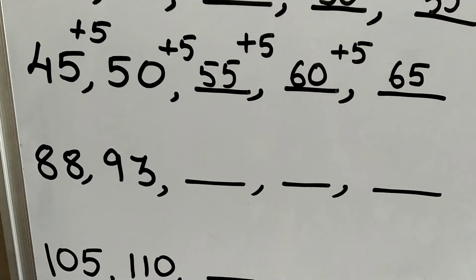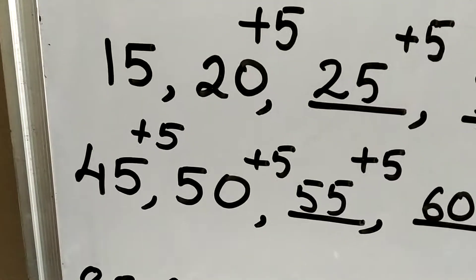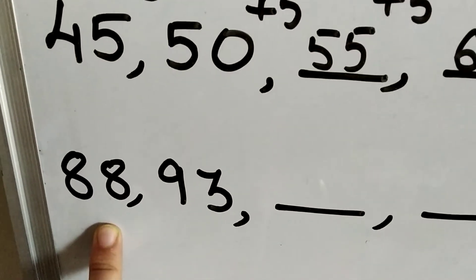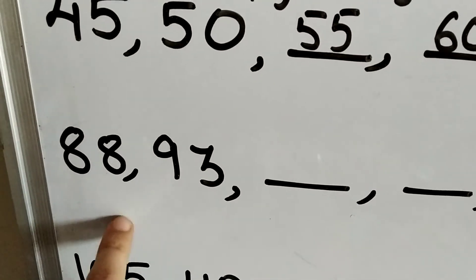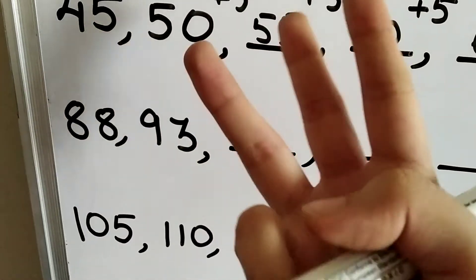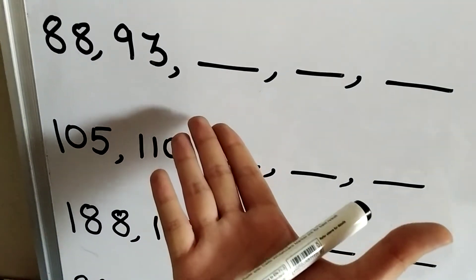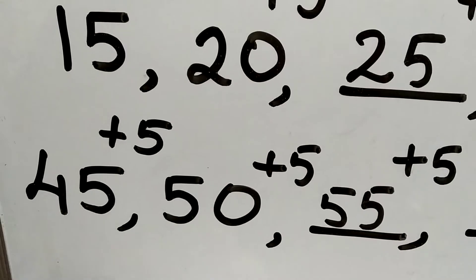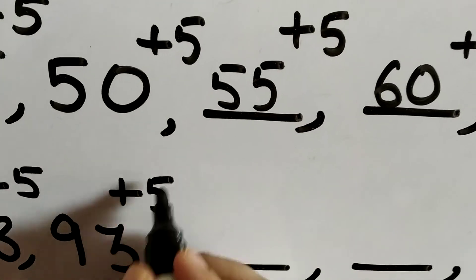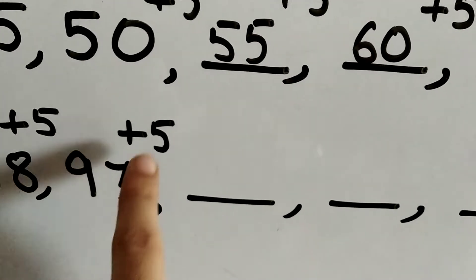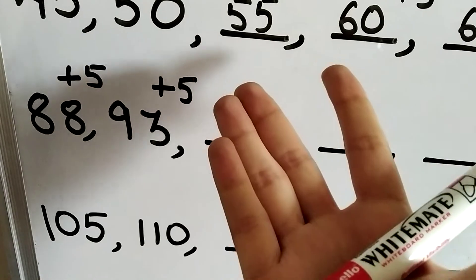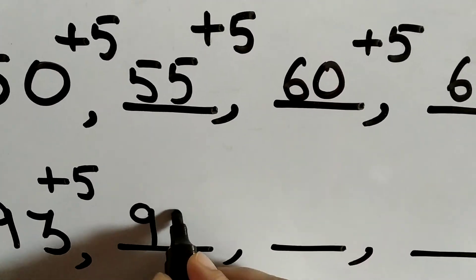Now there is a change in this category of question. We have 88 and 93. We count from 88 to 93: 88, 89, 90, 91, 92, 93 — again a difference of 5 numbers. So adding plus 5 to 88 gives 93. Now we need to complete the given blanks: 93 plus 5 gives 98, so we write 98 here.